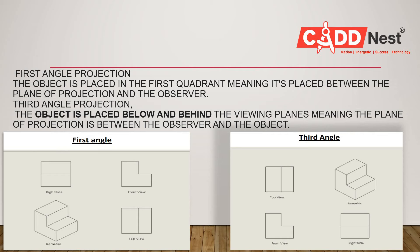In first angle and third angle projection, the object is placed between the observer and the projection plane in first angle projection. In third angle projection, the projection plane is placed between the observer and the object.